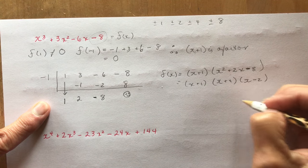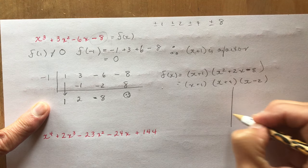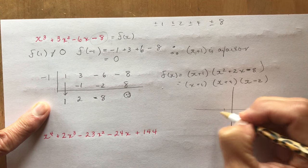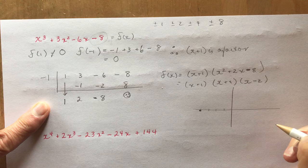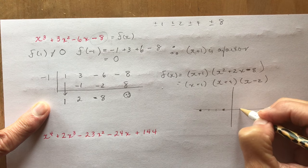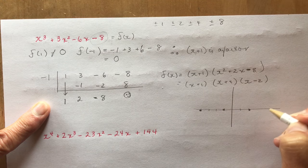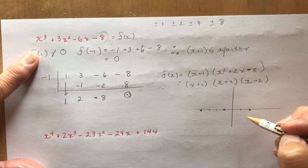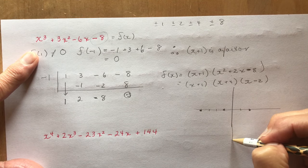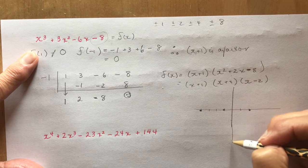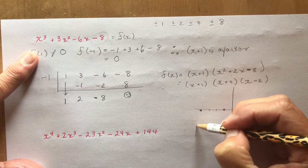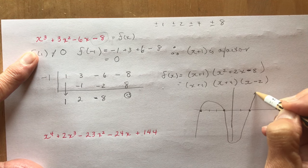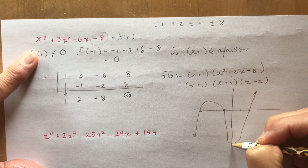And of course you could go ahead and sketch that one — it would be pretty easy. So I have minus 4, minus 1, and plus 2 on the x-axis. Again, it's a positive leading coefficient cubic function. The y-intercept is minus 8, so it goes way down there and comes through like this.